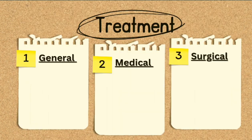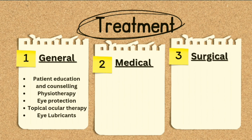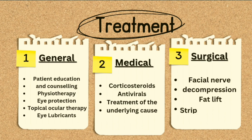Coming towards treatment, it is divided into three parts: general, medical, and surgical. General management includes patient education, counseling, physiotherapy, eye protection, topical ocular therapy, eye lubricants, and eye drops. Medical and surgical treatment is based on the underlying cause. For Bell's palsy, start oral corticosteroids within 72 hours; if viral infection is suspected, give antiviral therapy. Surgical options include facial nerve decompression, fat lift, and strip procedures.